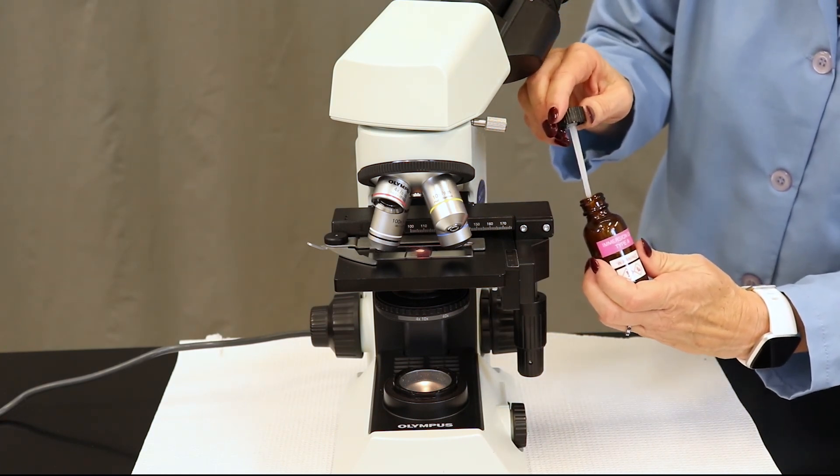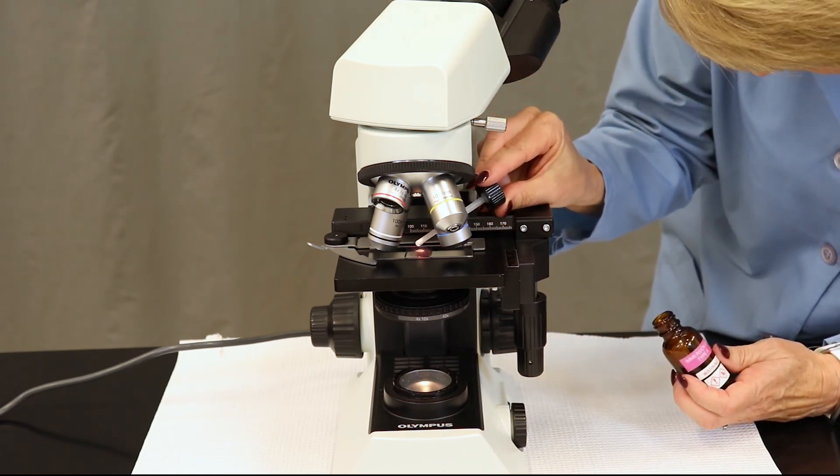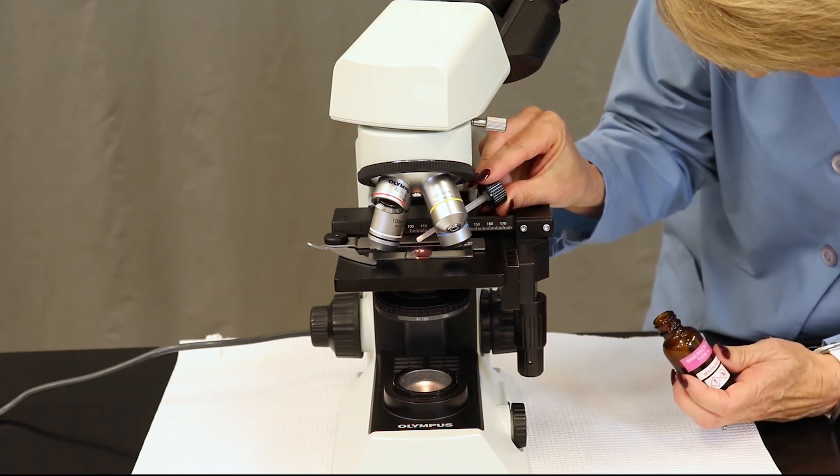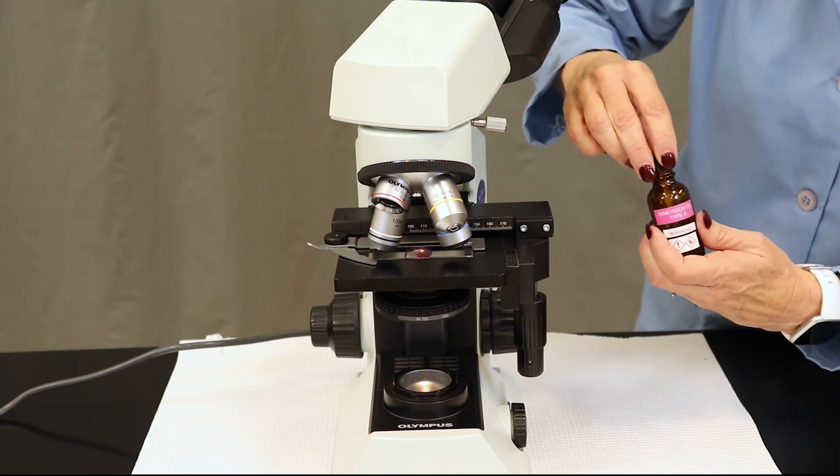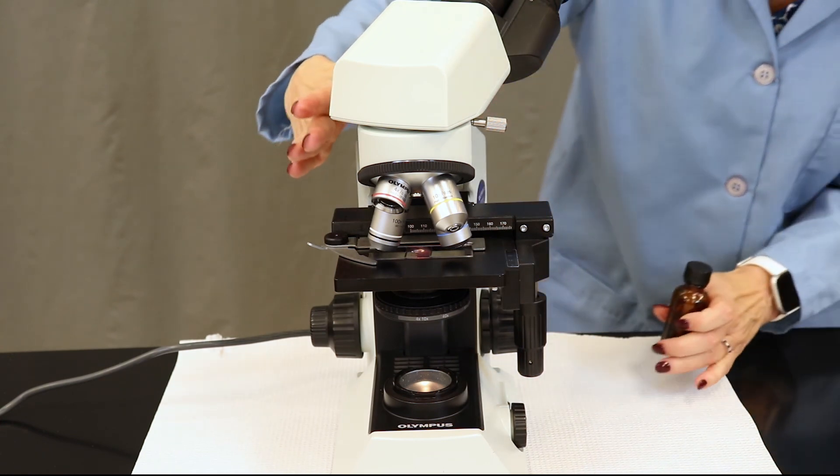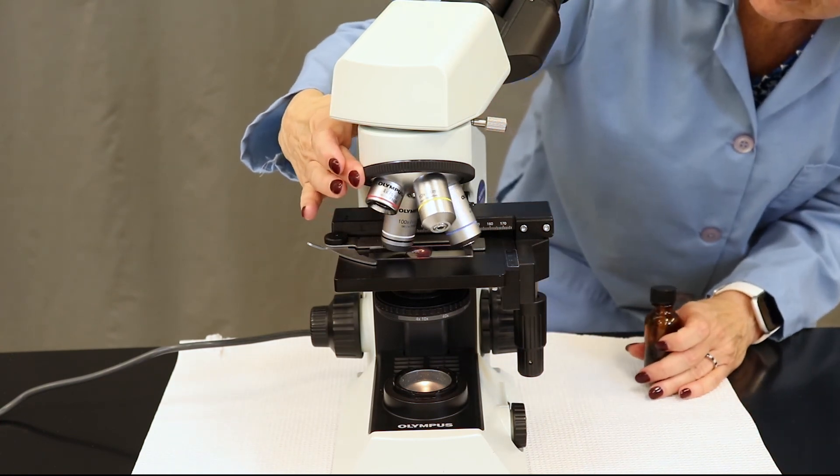You're now going to place a single drop of oil right over the glass slide, typically where you see the light shining through. Then place 100x into position.